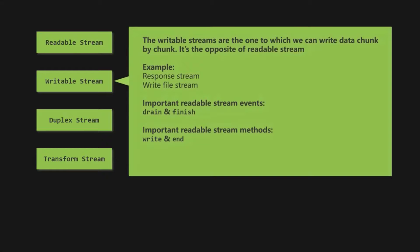Writable streams are the ones to which we can write data — the opposite of readable streams. A great example is the HTTP response we send back to the client, which is actually a writable stream. For example, if we want to send a big video file to the client, we would stream the result just like Netflix or YouTube instead of sending the complete file at once. The two important events of writable stream are the drain event, raised when the internal buffer has been emptied, and the finish event, emitted after calling the end method when all data has been flushed. The most important functions on writable stream are write and end.